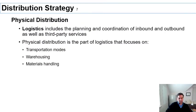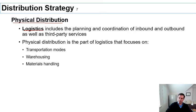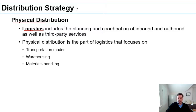The final aspect of distribution is physical distribution — especially important for products. This is the idea of logistics: all the planning and coordination of getting products both into the company so they can make the product, and outside the company so the product can make it all the way to the wholesaler, retailer, or final consumer, depending on your chosen channel strategy.